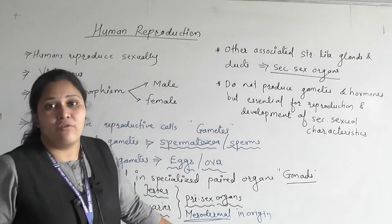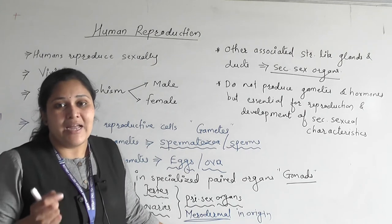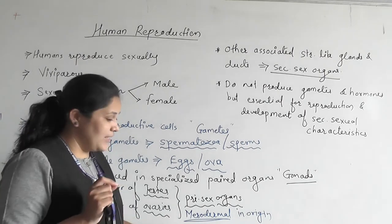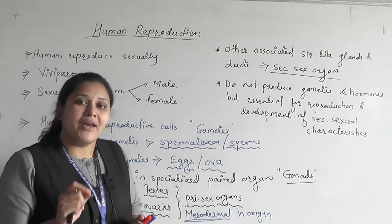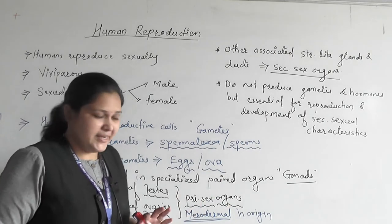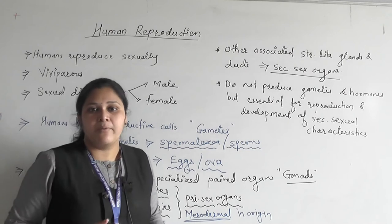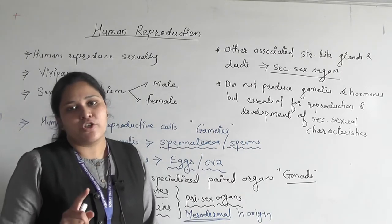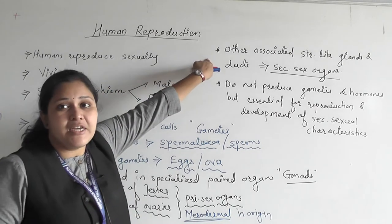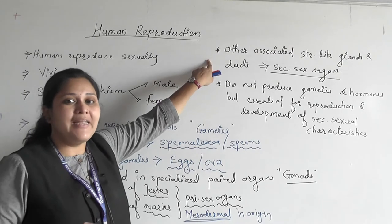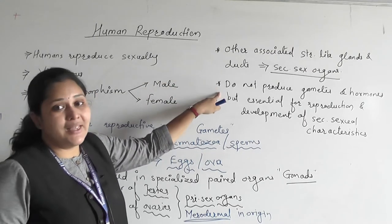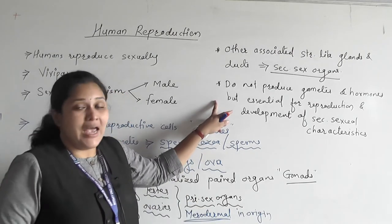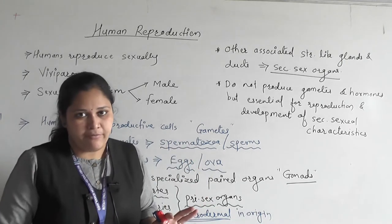These primary sex organs are mesodermal in origin and are located inside the abdominal cavity, so they are called intra-abdominal. In males, before birth, testes come out of the abdominal cavity, so they are extra-abdominal. They are involved in the production of gametes and hormones. Other associated structures — glands and ducts — which are not directly involved in gametogenesis or hormone production but are essential for development of secondary sexual characteristics and overall reproductive development, are called secondary sex organs.